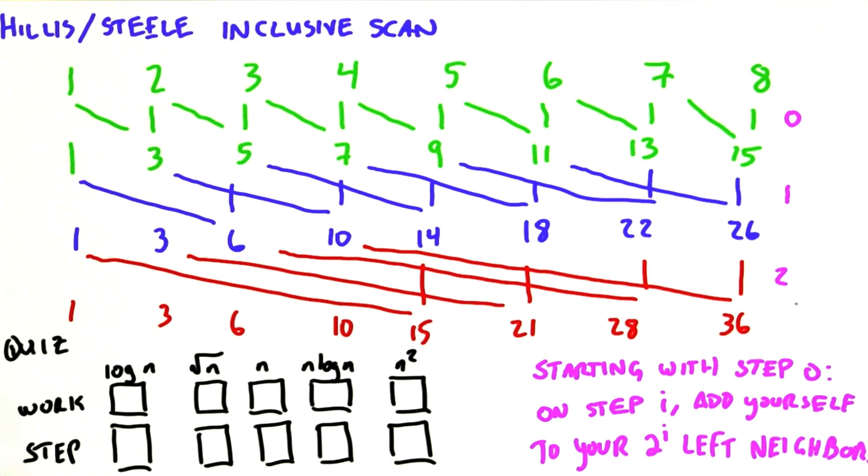So we'll start with the steps. Intuitively, we're doubling the size of the communication on every step until we reach the size of the input. This goes one hop, this goes two hops, this goes four hops over, and so on.